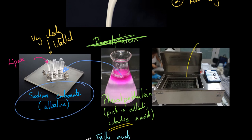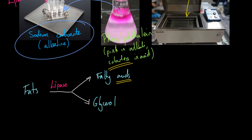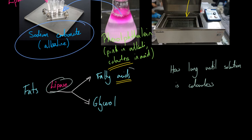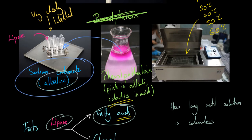You take all your tubes containing phenolphthalein and lipase and put them into water baths at a variety of temperatures — say 20, 30, 40, 50, and 60 degrees. Then you monitor how long it takes until the solution turns colorless. So the key question is: how long does it take the lipase to produce enough fatty acids to push the milk from being alkaline to being acidic?